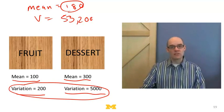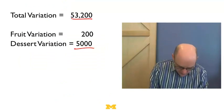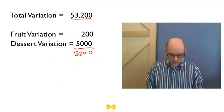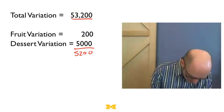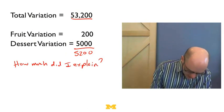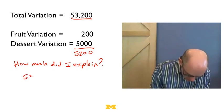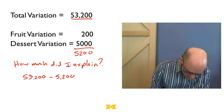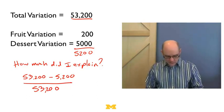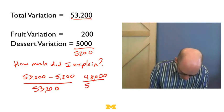What we want is we want a formal measure of how much we've reduced variation. And that's actually fairly simple. So I've got a total variation of 53,200. Fruit variation is 200, dessert variation is 5,000. So that gives me 5,200. So 53,000 to start, and I've got 5,200 left. So what we want to ask is, how much did I explain? Well, I started out with 53,200, and I now only have 5,200 left over. And so the amount I explained is 53,000 minus 5,200, which is 48,000, over 53,200.